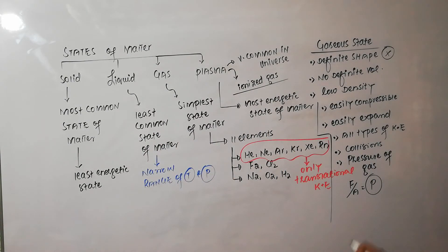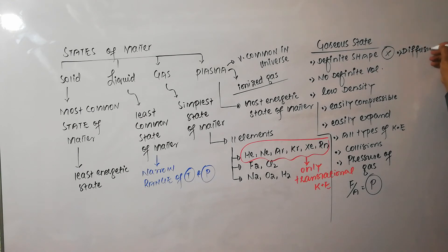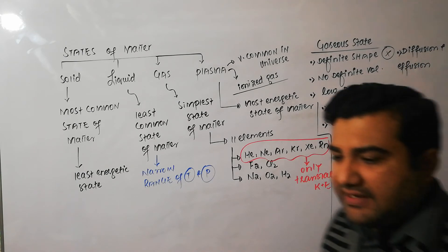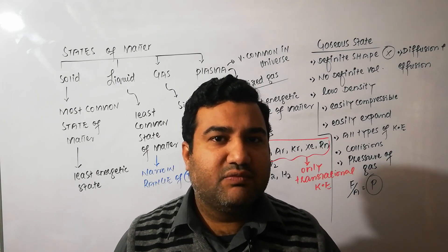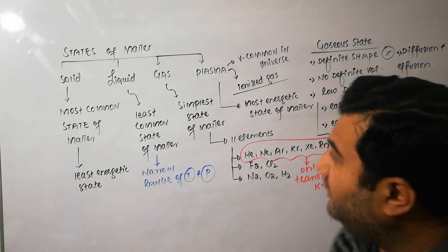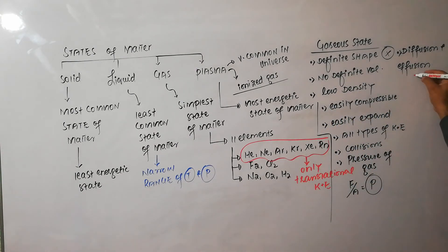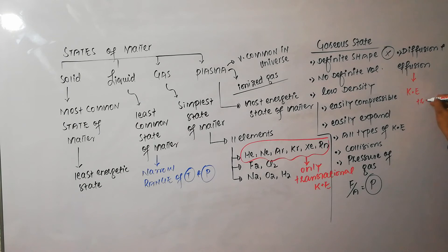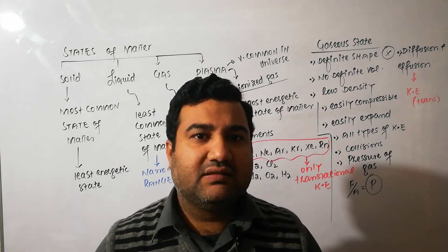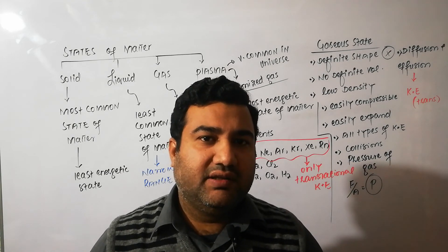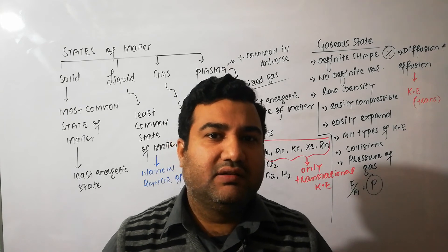Another property that gas molecules show is diffusion and effusion. Diffusion is the intermixing of gas molecules, while effusion is the leakage of gas molecules through a very tiny hole through which gas molecules leave one by one. Diffusion and effusion are most prominent in the gaseous state because gas molecules have translational kinetic energy, free motion, and free movement — the molecules are not bound to each other and are free to move.